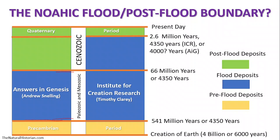On the right side we see a schematic representing the views of the Institute for Creation Research and Timothy Clarey, their resident geologist. They agree that the pre-flood/flood boundary is the same as Answers in Genesis, but they radically break from AIG by placing the end of the flood deposits near the end of the Cenozoic, right about the Neogene-Quaternary period divide — conventionally dated to just 2.6 million years ago. There are creationists who place the boundary lower and higher, but these are the two most popular views today.